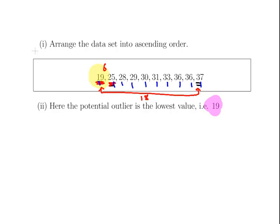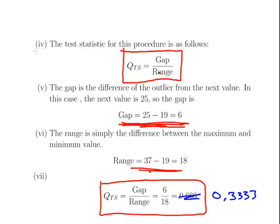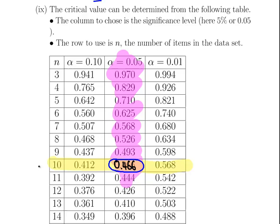Let's run through the steps again. First, put the data in ascending order and pick out the gap and the range, and check how many values are in the dataset. Then formally state the null and alternative hypotheses. Calculate the test statistic: Q_TS equals gap divided by range. Finally, look up the Dixon Q tables — the row is the number of items and the column is the significance level, usually 5%.